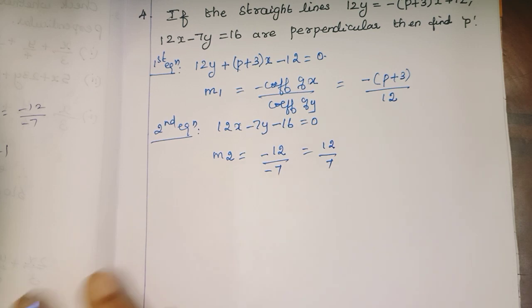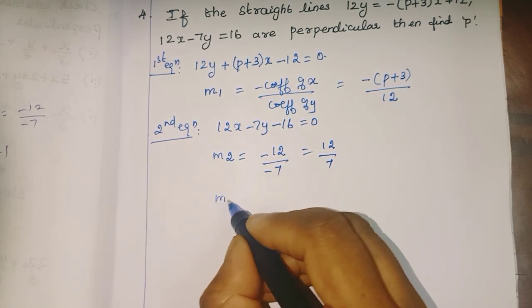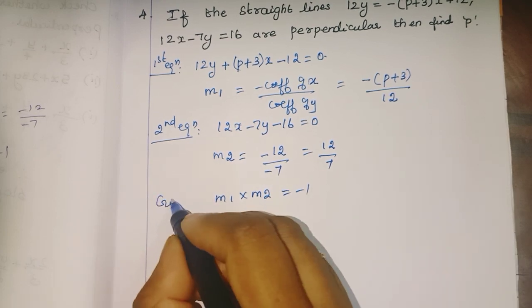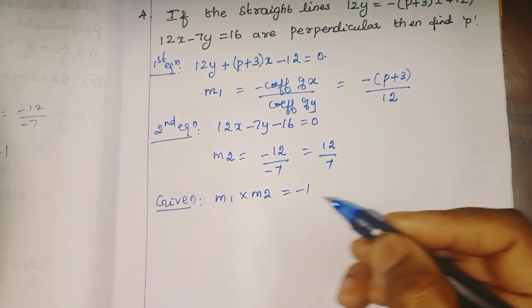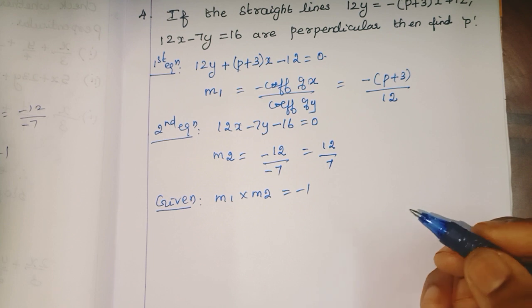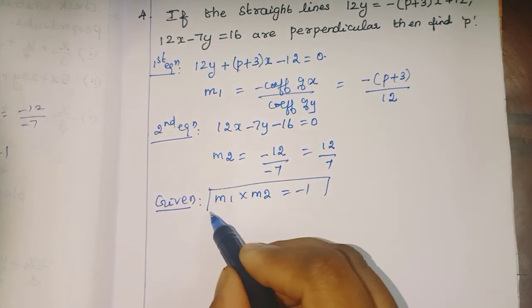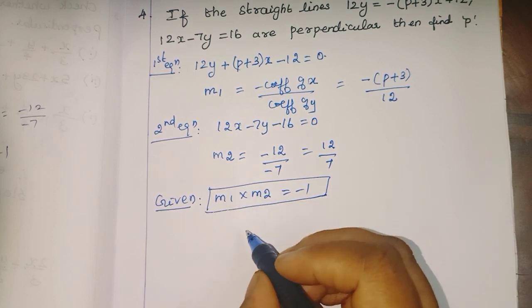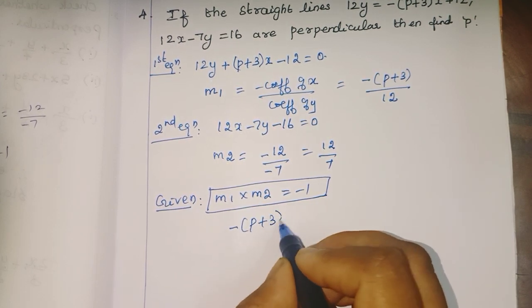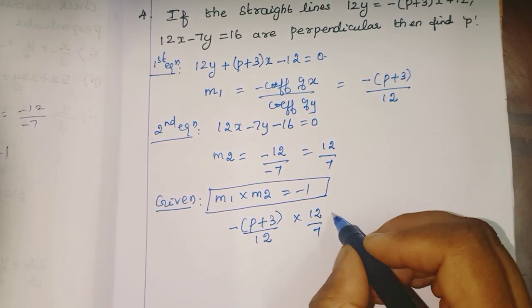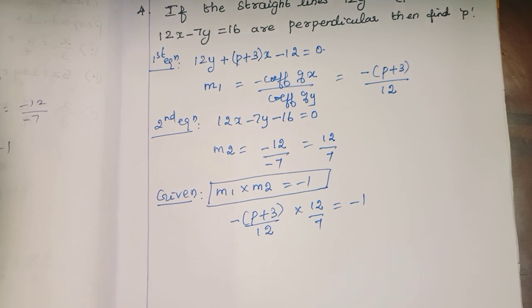Now, since the lines are perpendicular, m1 × m2 = -1. Given that the two lines are perpendicular, m1 × m2 = -1. So, -(p+3)/12 × 12/7 = -1.